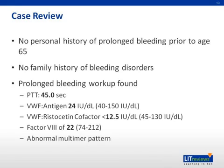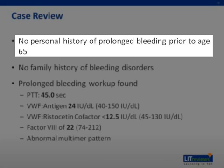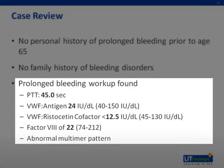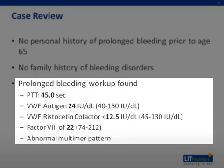Going back to our case, the patient had no prolonged bleeding history prior to his polyp surgeries in 2002, and thus no personal history prior to age 65. He has no family history of bleeding disorders, and this indicates that most likely he has an acquired von Willebrand syndrome. His bleeding workup found a PTT prolonged at 45 seconds, a von Willebrand factor antigen level low at 24, a von Willebrand factor ristocetin cofactor activity also low at less than 12.5, and a factor VIII level low at 22. The patient also had an abnormal multimer pattern.